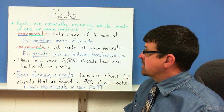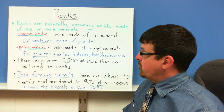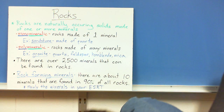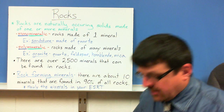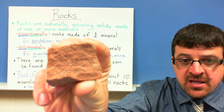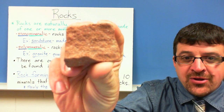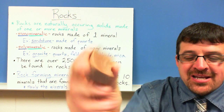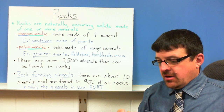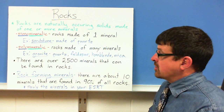Sandstone is a good example of a monomineralic rock because it's just made out of quartz. Here's a piece of sandstone — the grains of sand in there are just made of quartz.